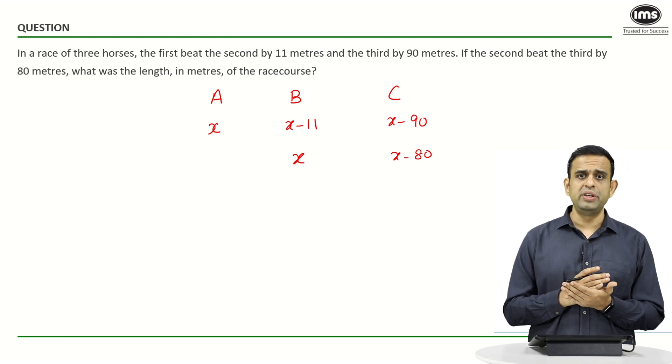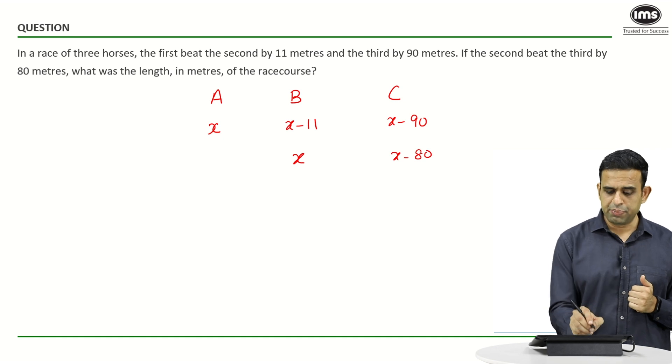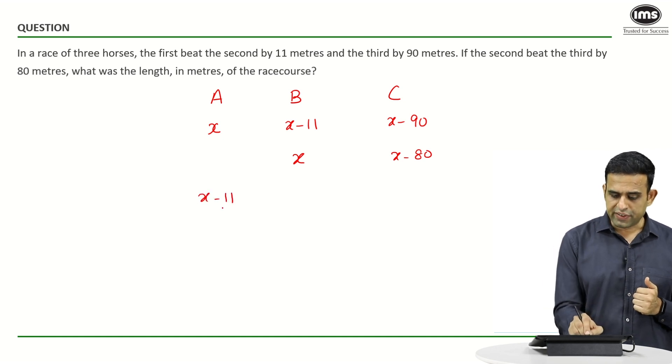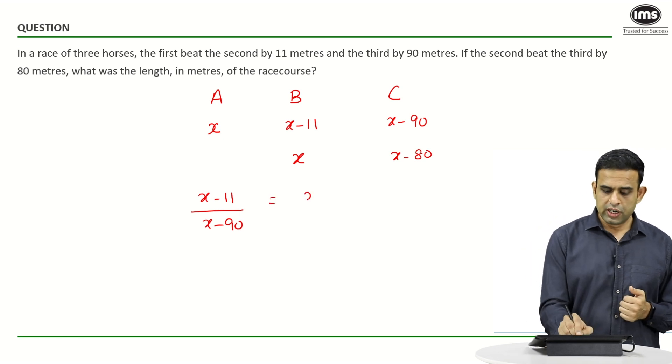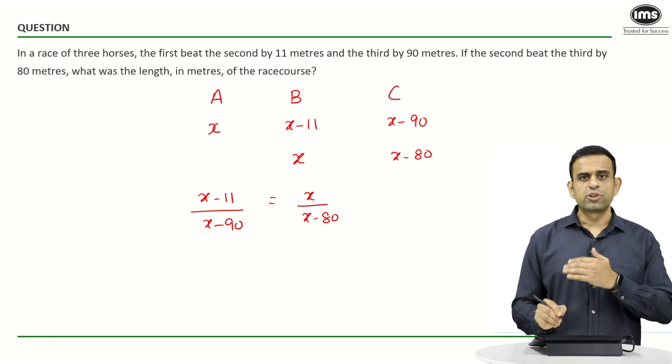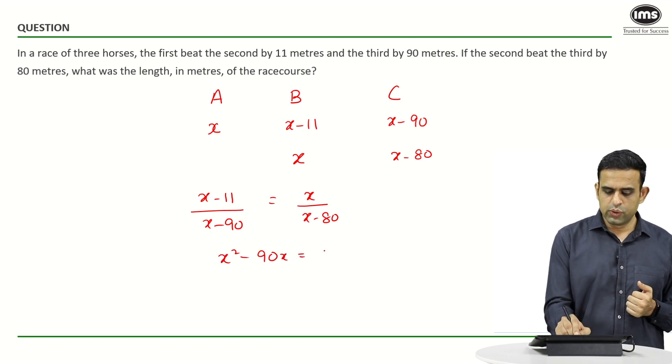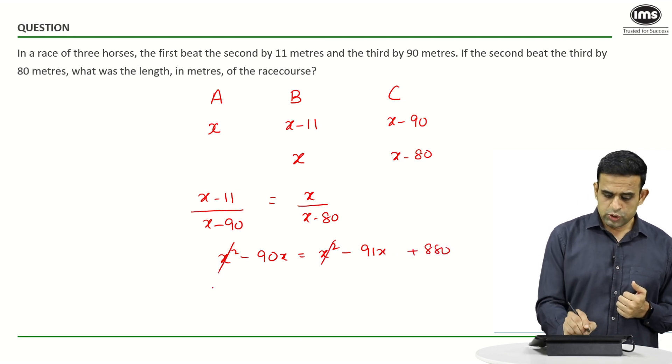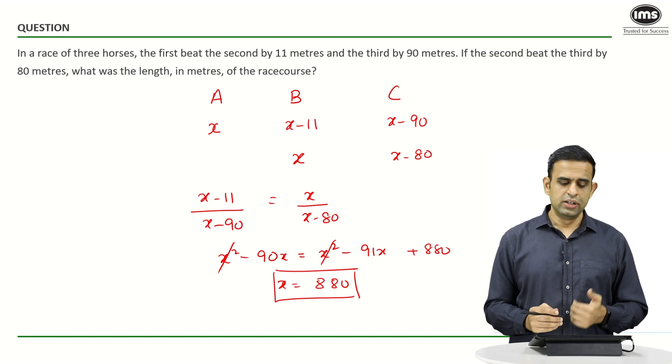To find out the value of X, we can find the speed ratio of B and C from case 1 and case 2. Speed ratio of B and C must be (X minus 11) upon (X minus 90), which equals X upon (X minus 80). Cross multiplying, you get X squared minus 90X equals X squared minus 91X plus 880.